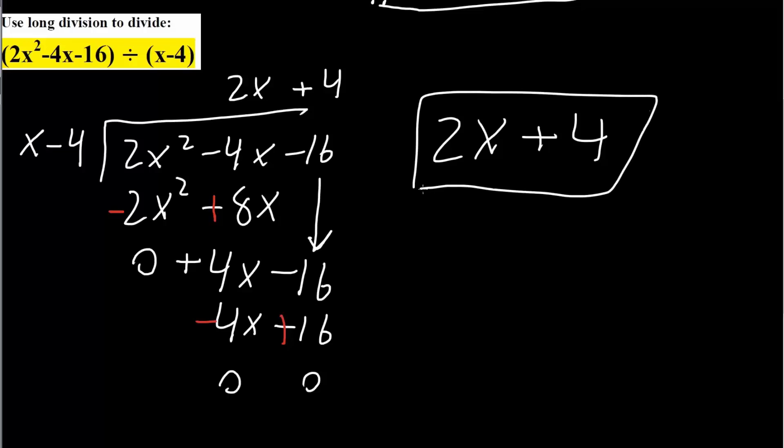And we can even check. If we were to multiply 2x plus 4 times x minus 4, we would in fact get 2x squared minus 4x minus 16. And if you want, you can go ahead and try it.